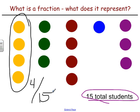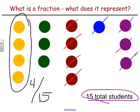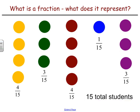Similarly, we can go for three out of 15 with the green, another four out of 15 because we have one, two, three, four students there, one out of 15 for blue, and three out of 15 for purple. And those fractions are represented right here.